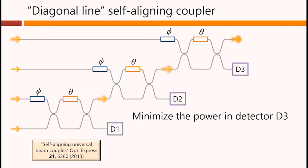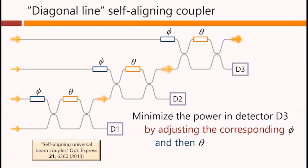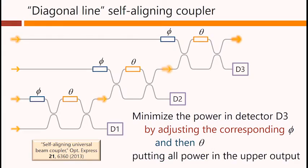Finally, we minimize the power in detector D3, this one here, by adjusting the corresponding phi, and then the corresponding theta, to put all the power, now the total input power, in the upper output.